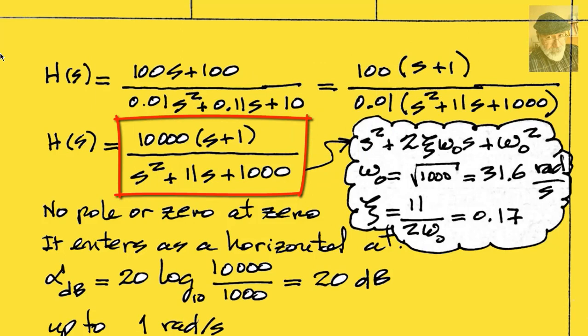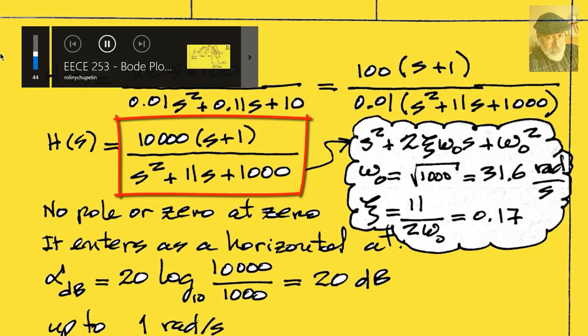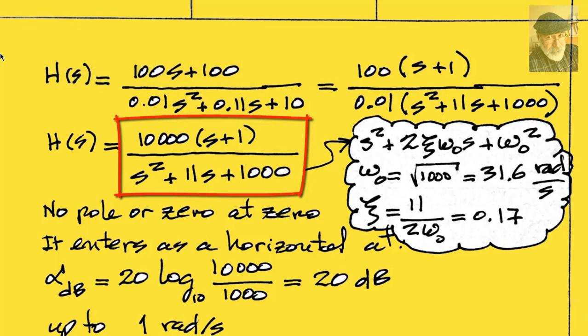We can see two things so far. First, that there is neither a zero nor a pole at zero. Second, that there is a single zero at 1 radians per second.